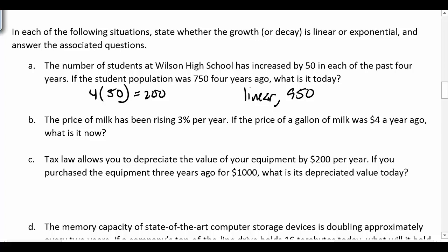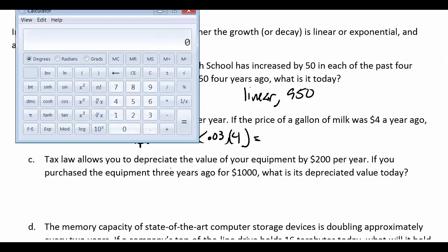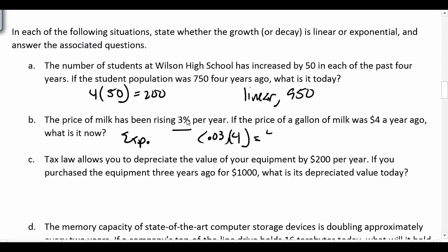B: The price of milk has been rising 3% per year. If the price of milk was $4 a year ago, what is it now? Okay, well the 3% means that we're growing by a percent, so that would be an exponential growth. And $4 a year ago, so I want to figure out what 3% of 4 is. So 0.03 times 4 is 12, so 12 cents. And if I add that to the initial $4, that means it now costs me $4.12.